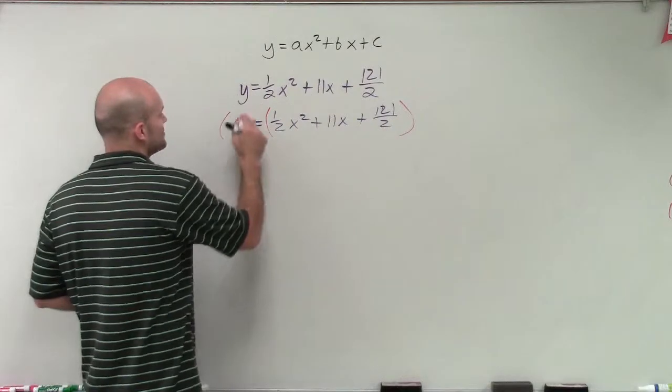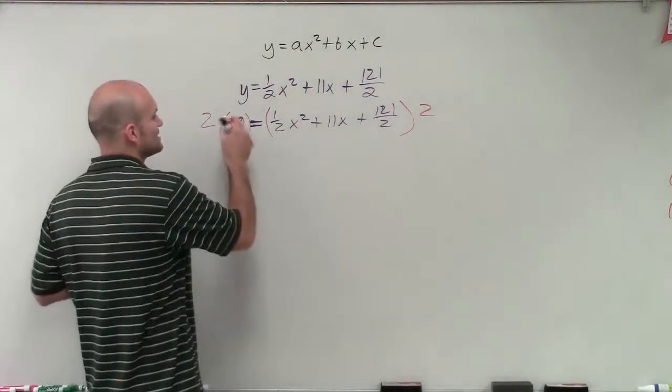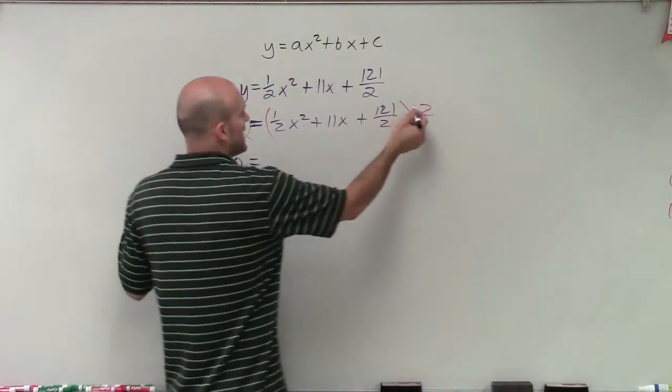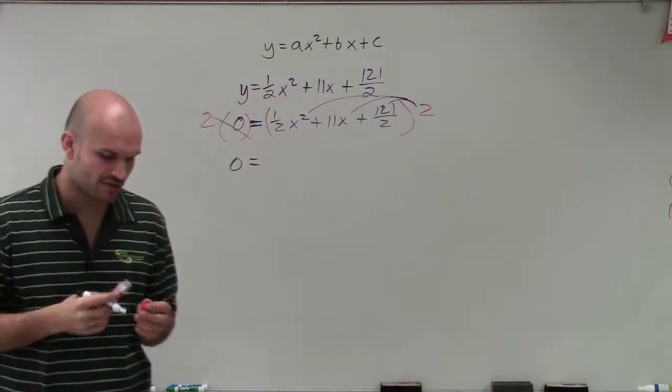Because multiplying by 2 times 1 half, that's going to give me 1. So I put everything in parentheses. Well, obviously, 2 times 0 is just going to still equal 0. But now I need to make sure I apply distributive property, and I need to multiply the 2 times each one of these terms.